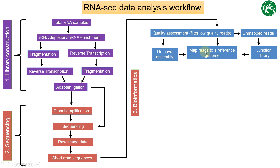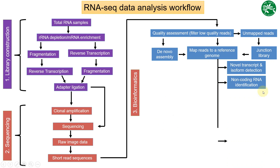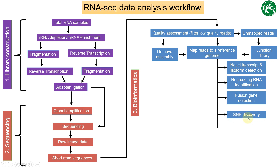When mapping reads to a reference genome for biological insights, this is followed in different steps. In the first step we try to find novel transcripts and isoform detection. After novel transcript and isoform identification, we go for non-coding RNA identification, then fusion gene detection, then SNP discovery — single nucleotide polymorphism discovery — in your different samples, and lastly copy number identification while mapping your reads to the reference genome.